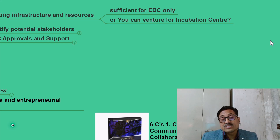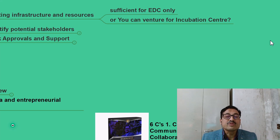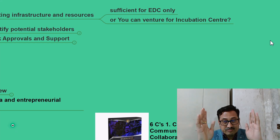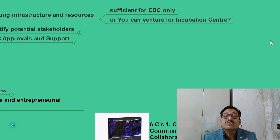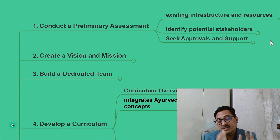The incubation center is a bigger entity where R&D takes place, prototypes are made, market surveys are conducted, minimum viable products are prepared and assessed — it requires significant infrastructure. The entrepreneurial development cell is the basic one that acts like a funnel: it reduces and validates ideas and then sends them to the incubation center. The first step again is to conduct a preliminary assessment to check whether your existing infrastructure is sufficient to nurture those ideas and try to transfer them into business ideas.